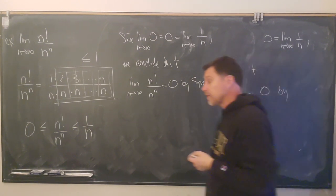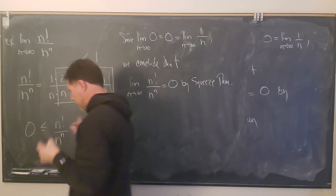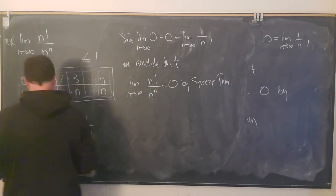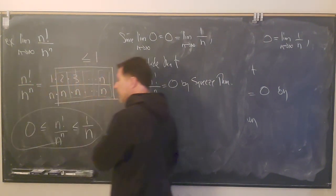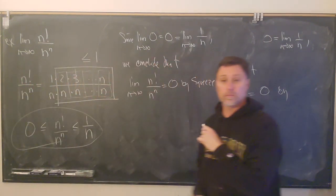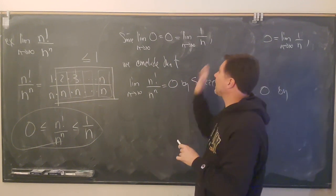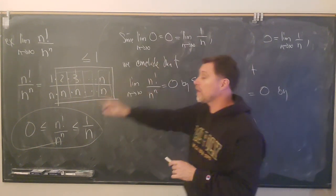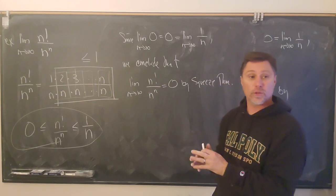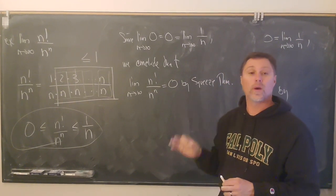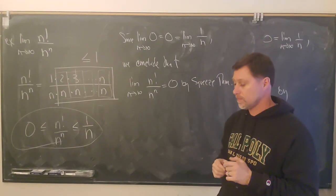When applying the squeeze theorem, you need to set up a true inequality, then analyze the limits on both the left and right hand sides. If you can show those are equal, then the sequence in the middle must equal that same limit.